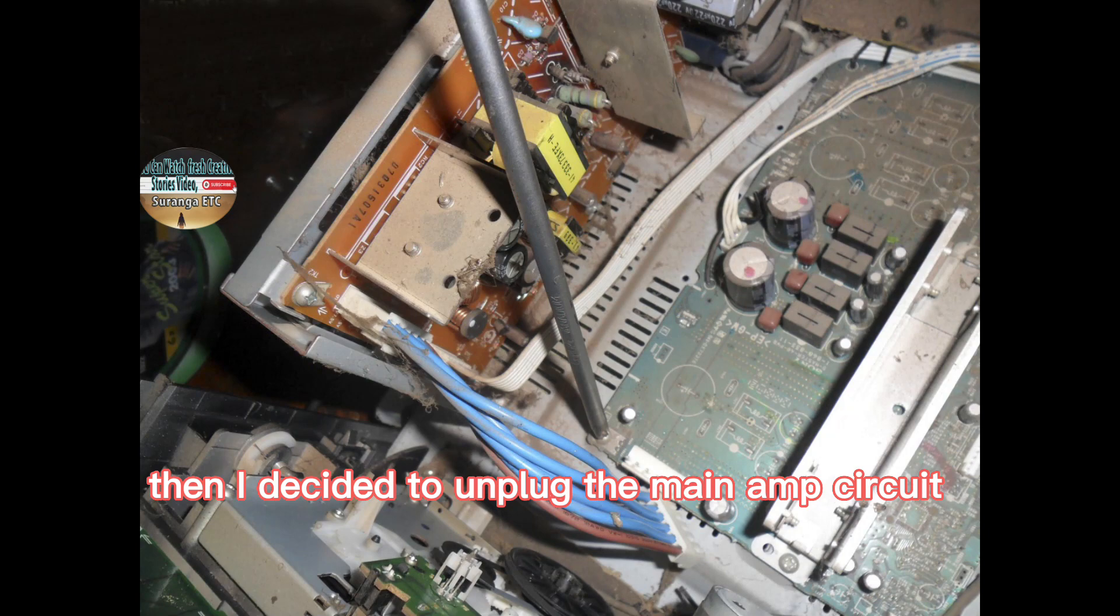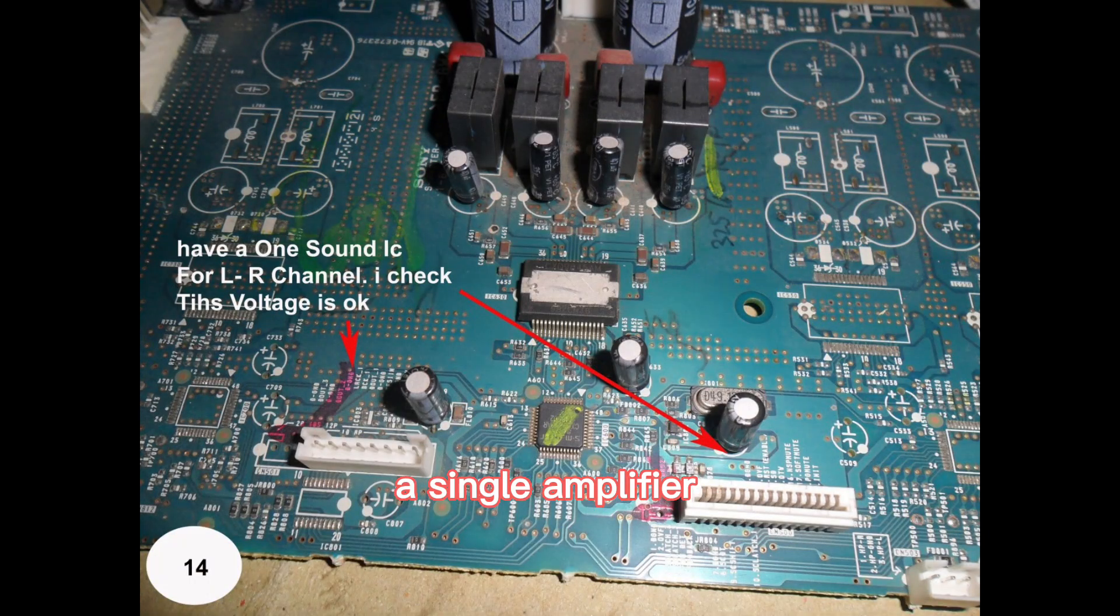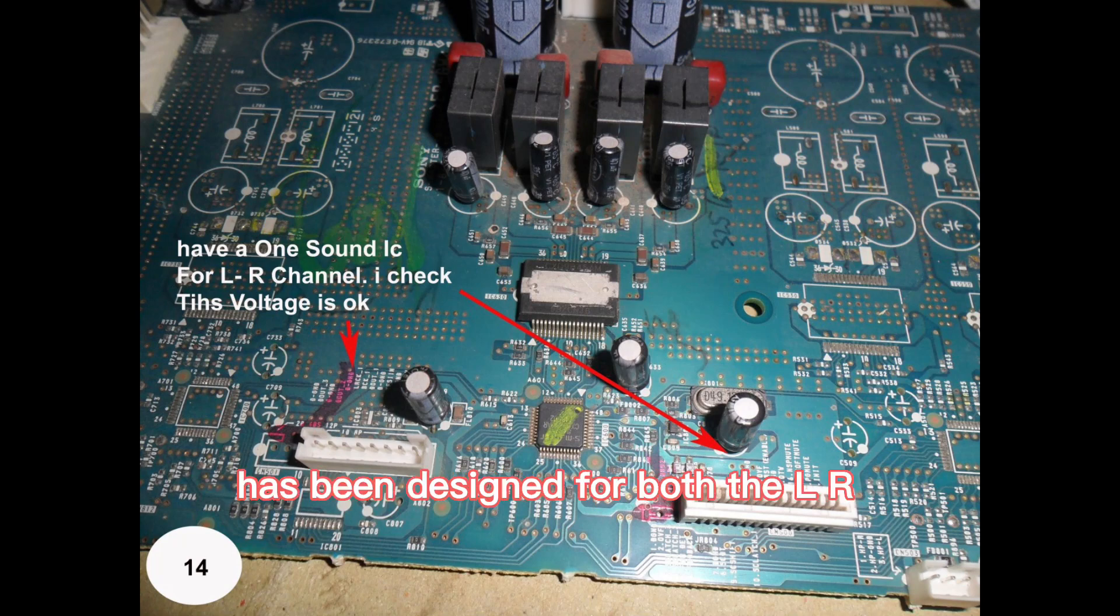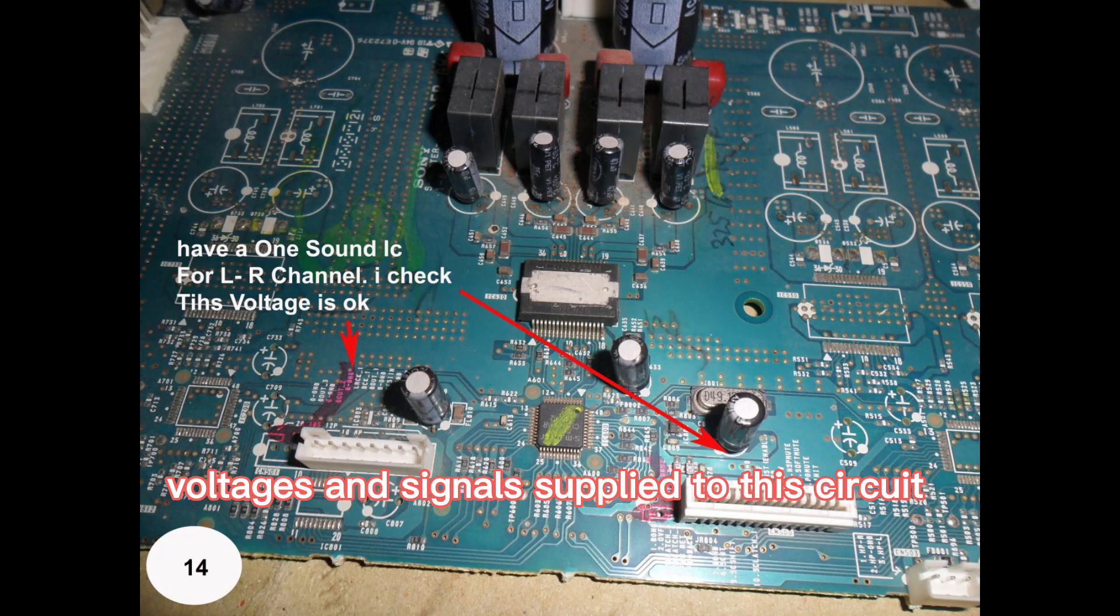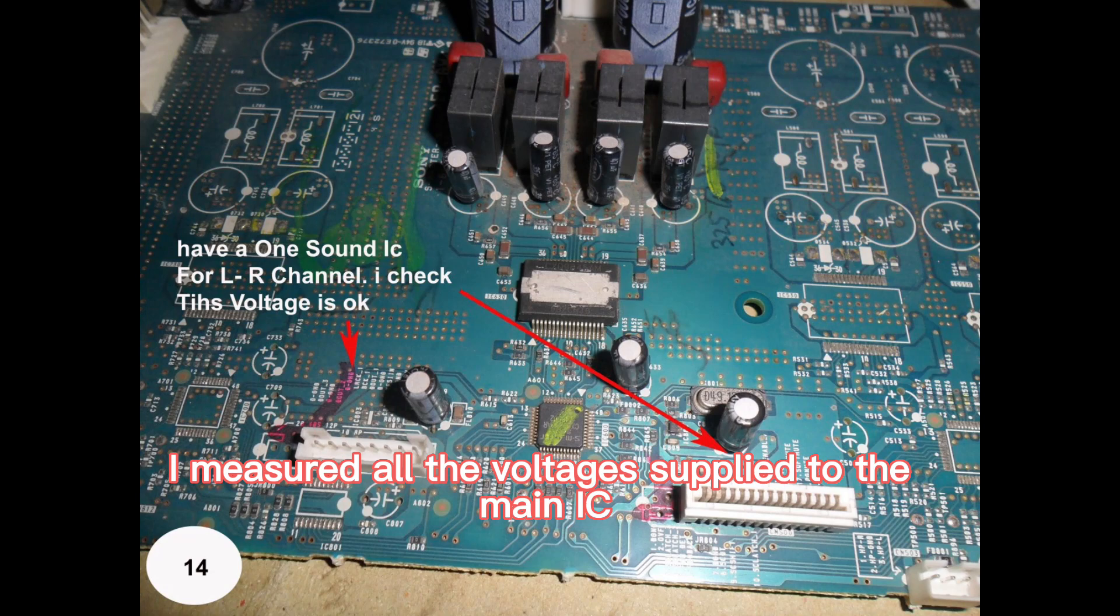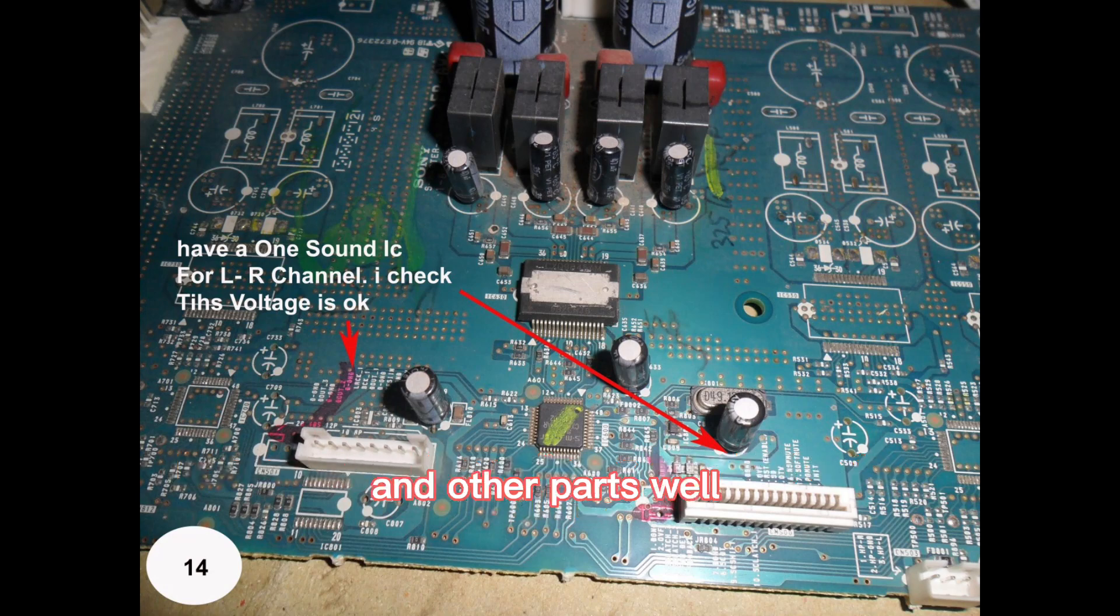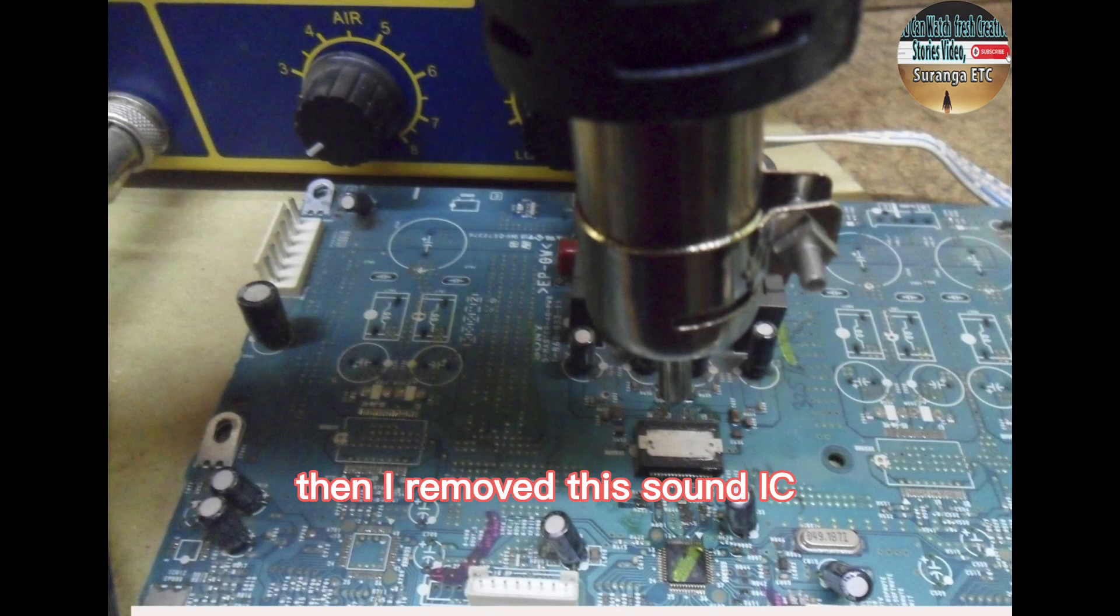Then I decided to unplug the main amp circuit and check it. A single amplifier SMD sound IC has been designed for both the LR channel of this amplifier circuit. I measured all the main power voltages supplied to the main IC and other parts well. Then I removed this sound IC and decided to install a new IC.